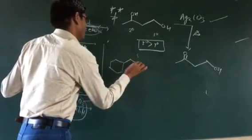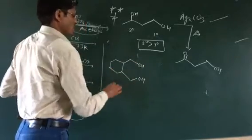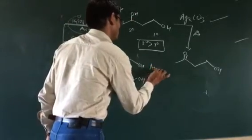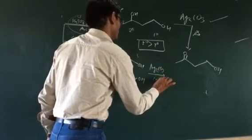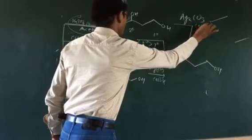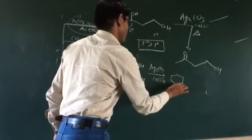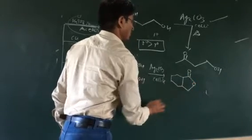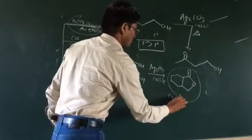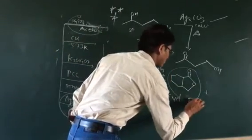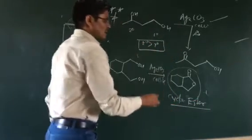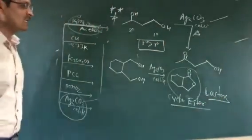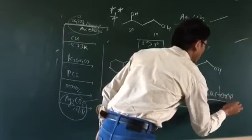Consider a diol-type compound where there are two OH groups — not geminal, not vicinal. Using Ag2CO3 on celite (Fetizon reagent), the product formed is a cyclic ester — that is, a lactone. So starting from this type of reactant molecule, a lactone is formed as the product.